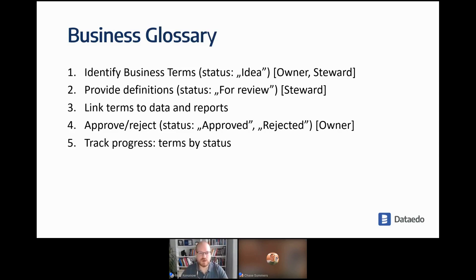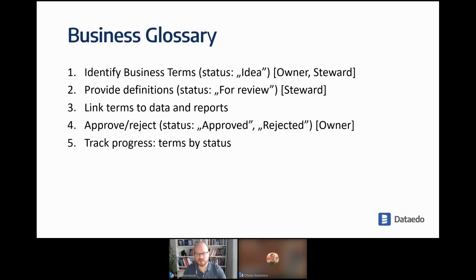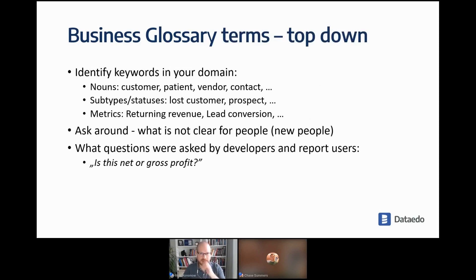For the business glossary, the first step is identifying terms. You can use a status custom field — we'll be creating a native field for that in the future. The data steward provides definitions and sets terms to 'for review.' You should also link terms to data and reports — for each term, identify where you can find that information in your databases. The data owner then approves or rejects the definition. Track progress by checking how many terms you have and how many are approved.